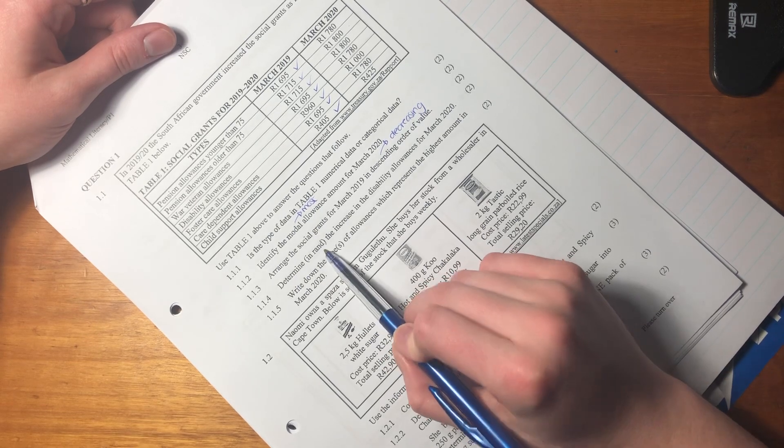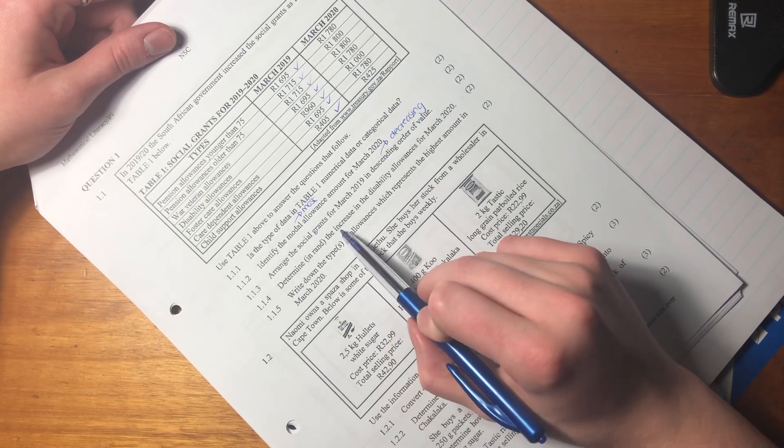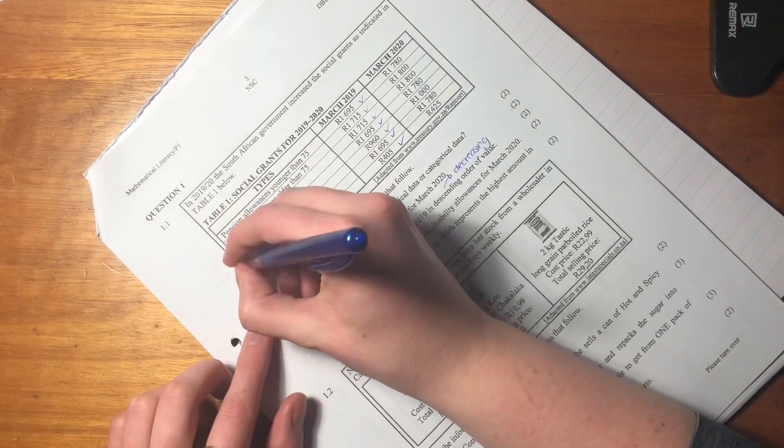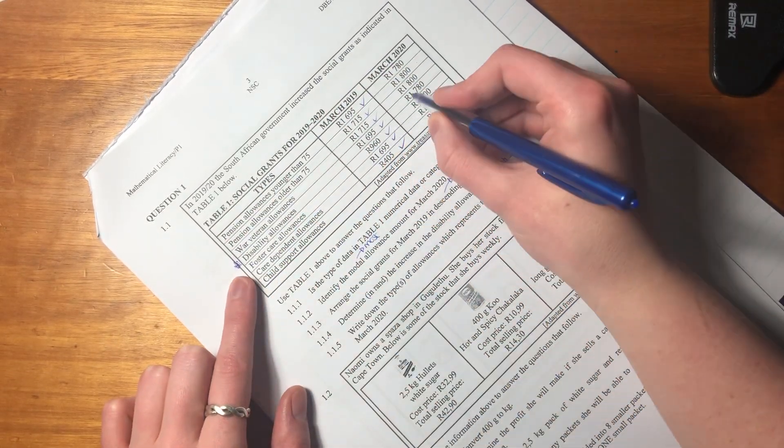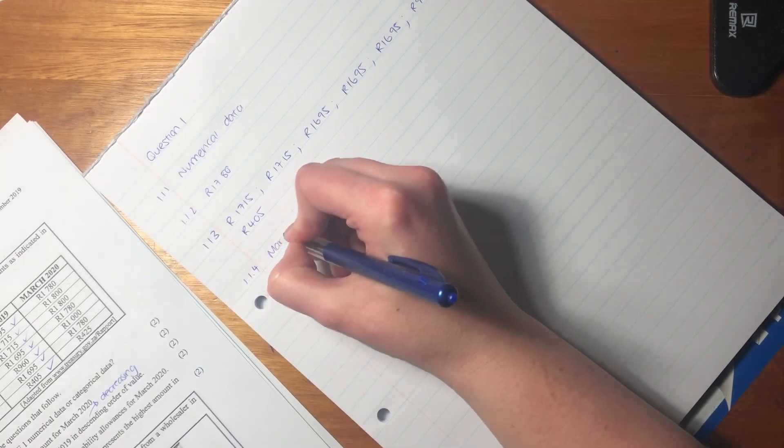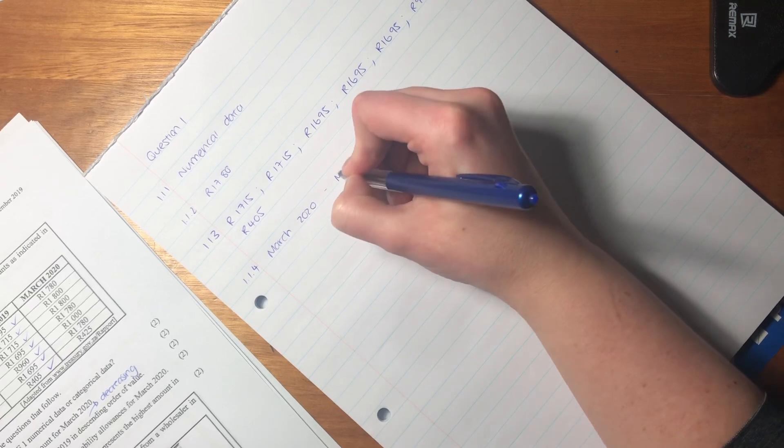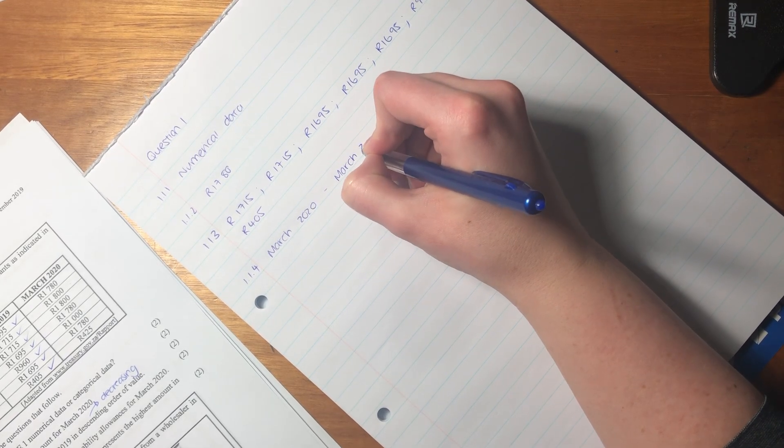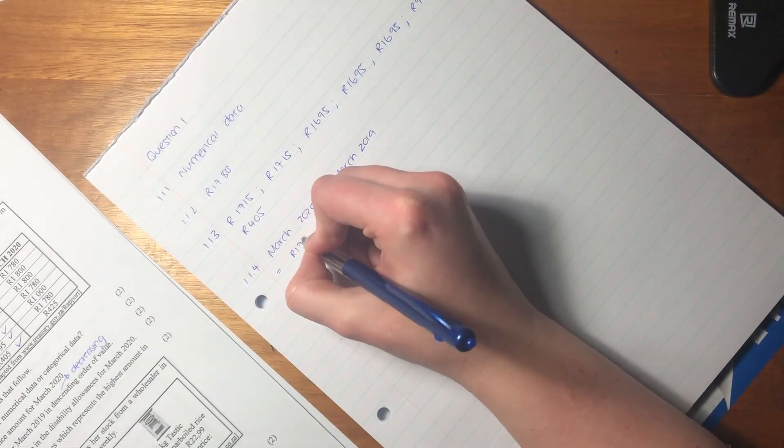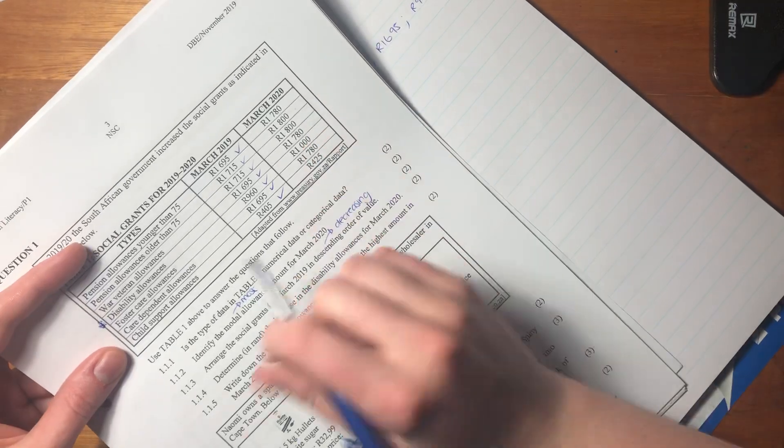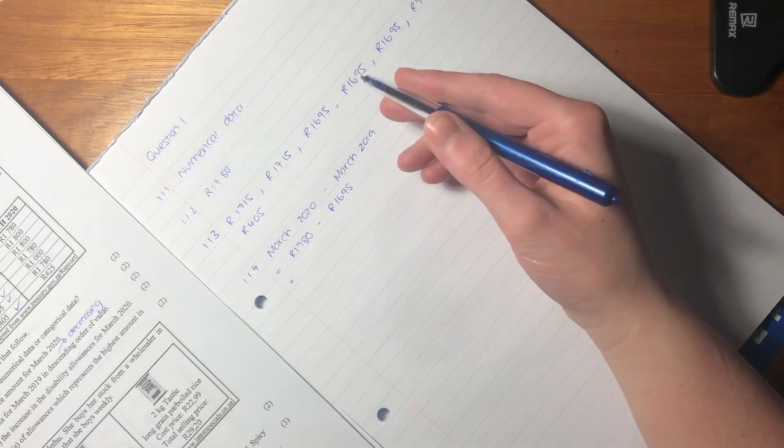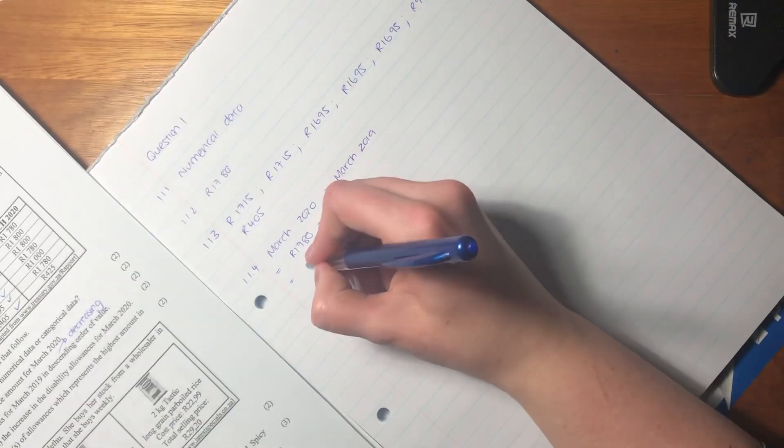Let's do 1.1.4. It says determine in rand—that's important, it's telling you it wants it in a measurement—the increase in the disability allowance for March 2020. The disability allowance is this line and we see that it went to 1780 but it was at 1695, so we need to say March 2020 minus March 2019. In March 2020 it was 1780 and in March 2019 it was 1695.